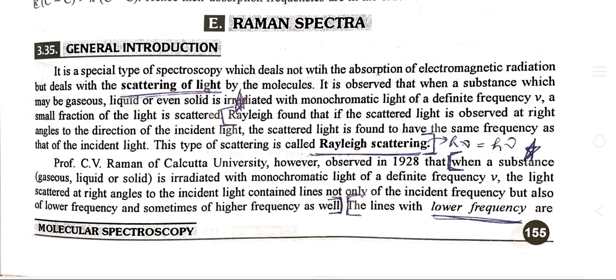Rayleigh found that if the scattered light is observed at right angles to the direction of the incident light, the scattered light is found to have the same frequency as that of the incident light. This type of scattering is called Rayleigh scattering. Professor C.V. Raman of Calcutta University, however, observed in 1928 that when a substance is irradiated with monochromatic light of a definite frequency, the light scattered at right angles to the incident light contains lines not only of the incident frequency.